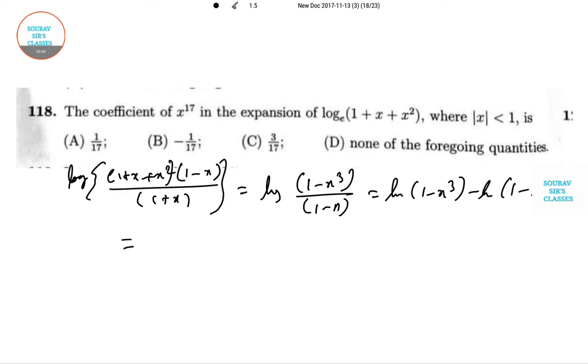So this has two expressions. This is -x³/3 - x⁶/6 minus dot dot dot, and minus of -x/1 - x²/2 dot dot dot minus x¹⁷/17 dot dot dot.